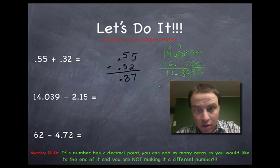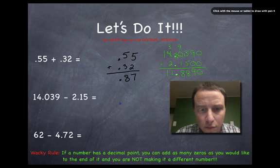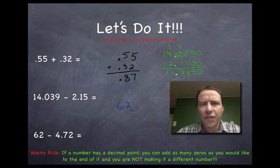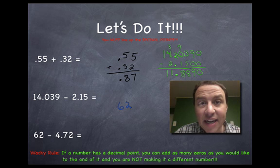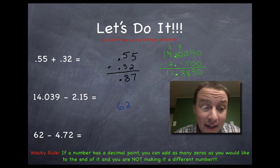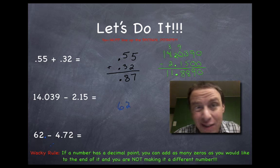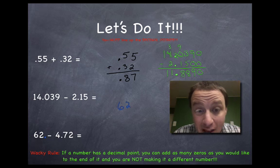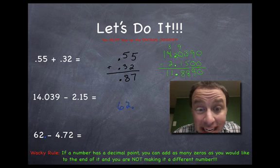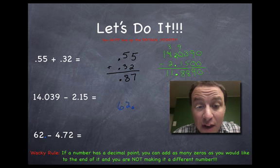Okay. Let's do this last one. 62. Now you might already be asking yourself, there is no decimal point there. How do I line it up? Well, there's an invisible decimal point after the ones place in every number. We just don't write it because we don't have to. But when we're adding and subtracting decimals, we need it there. So we need to put it in.